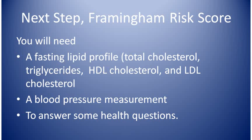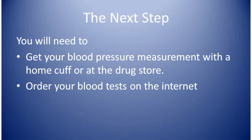To calculate your Framingham risk score, you'll need to get some blood tests — a fasting lipid profile — blood pressure measurements, and answer questions about gender, age, and smoking history. You can use a home blood pressure cuff or machines at drug stores. You can now get whatever blood tests you want online without having to see the doctor first, and often they'll cost far less than through your insurance, especially if you have a high deductible. Just go to Google and type in blood tests. The results are sent directly to you and can also be sent to any doctor you specify.